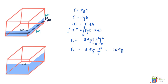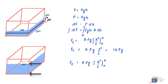Using the same logic for the case when water is filled to 4 meters: F₄ = 8ρg × [h²/2] from 0 to 4. Evaluating this gives F₄ = 8ρg × (16/2) = 64ρg, where ρ is the density of water.